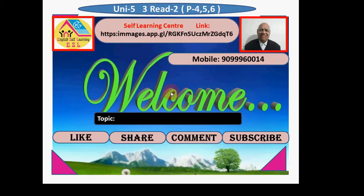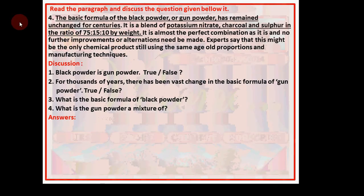Hello friends, this is unit number 5, read 2, para number 4, 5, 6. That means we will discuss para number 4, 5, 6 one by one. Our main purpose here is to develop comprehensibility, means comprehension skills, and second, enrich the vocabulary. That is main.